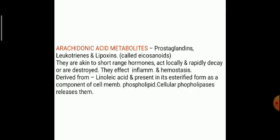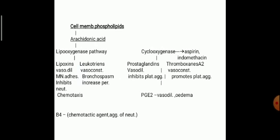The arachidonic acid metabolites are prostaglandins, leukotrienes, and lipoxins — also called icosanoids. They are akin to short-range hormones, act locally, and rapidly decay or are destroyed. They affect inflammation and hemostasis. They derive from linoleic acid and are present in esterified form as a component of cell membrane phospholipids. Cellular phospholipases release them, converting cell membrane phospholipids into arachidonic acid via two pathways: the lipoxygenase pathway and the cyclooxygenase pathway. The cyclooxygenase pathway can be inhibited by aspirin and indomethacin.